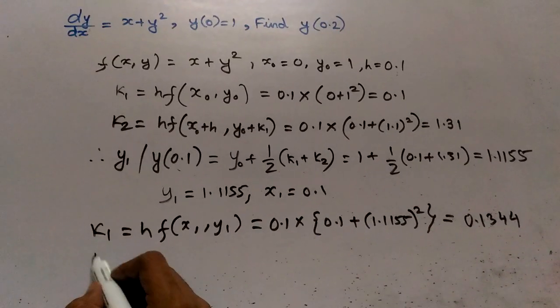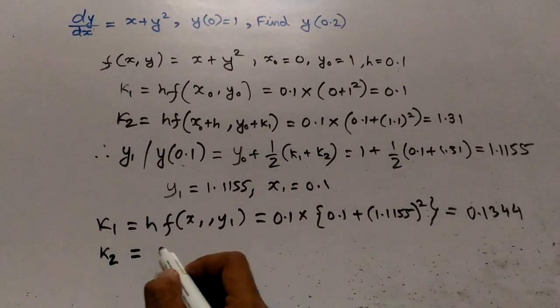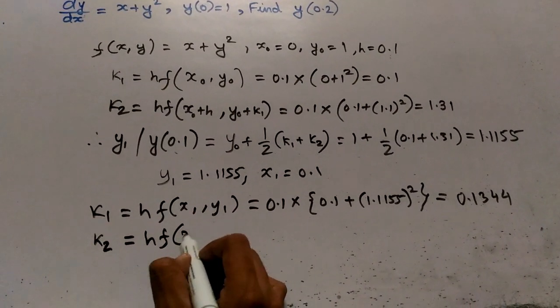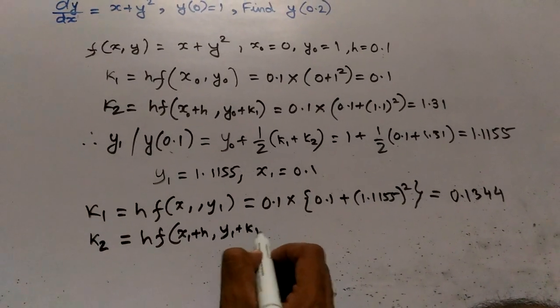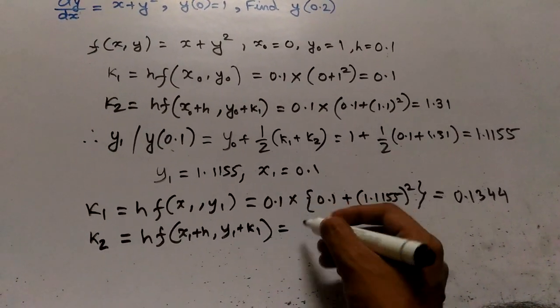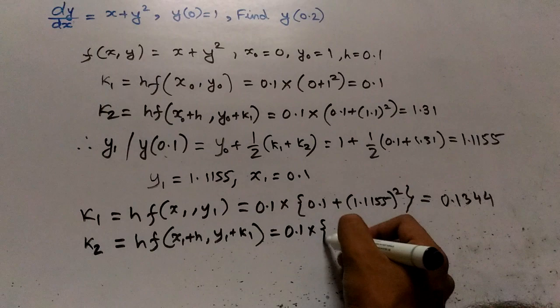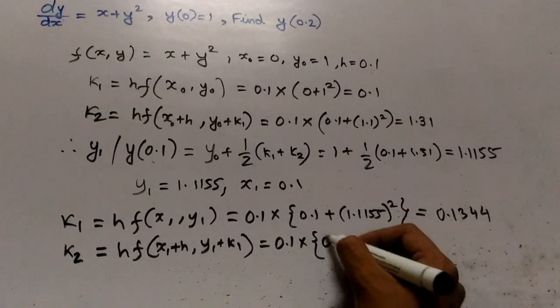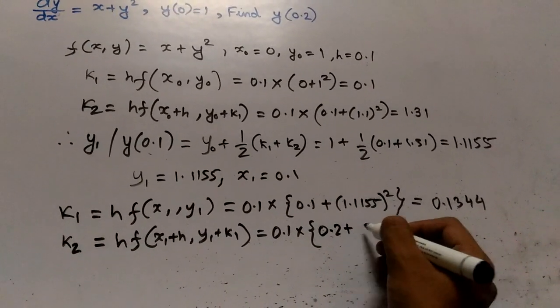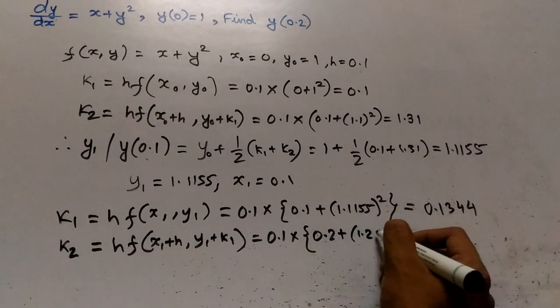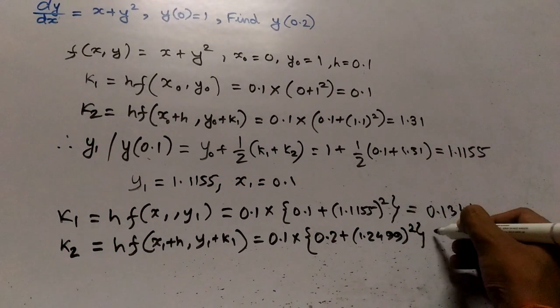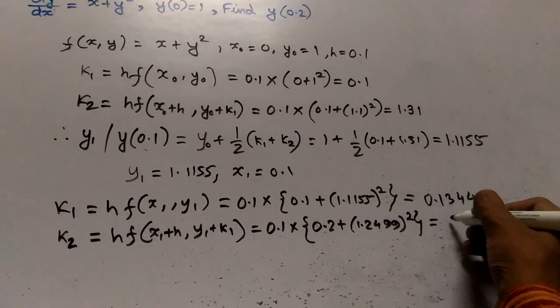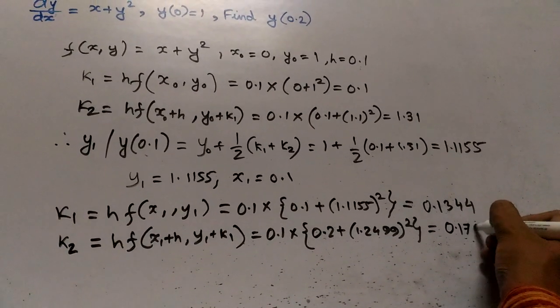Then we will calculate the value of K2 for y2, that is HF(x1 plus h, y1 plus K1), that equals 0.1 into 0.2 plus 1.2499 whole squared, that equals 0.1762.